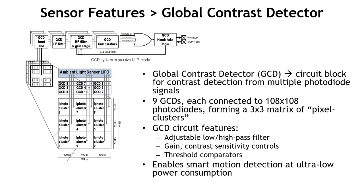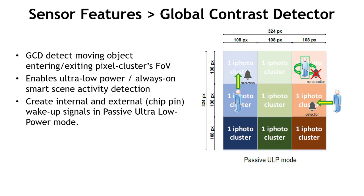The pixel array can be subdivided into sectors of approximately 100×100 pixels, each fed into a global contrast detector — similar to a single pixel — that down-samples the operation of the whole pixel array. This can be used for very low power operation in a wake-up arrangement: the sensor can detect activity entering the field of view or moving from one sector to another.